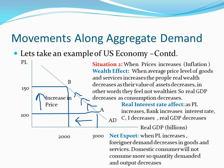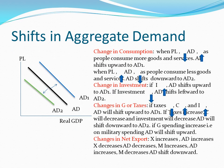The next point is net exports. When the price level increases from 100 to 150, foreign demand decreases for goods and services, so domestic consumers will not consume more. Quantity demanded and output decreases from point A to B. You can see the movement is to the upper side along the aggregate demand curve.